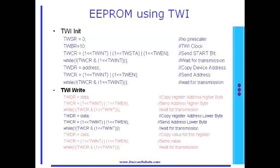This application is similar to the RTC example we have seen in the last chapter. To initialize the communication between the ATmega32 and the 24C256, initialization is done by setting the TWSR, TWBR, and TWCR registers. Further, by sending the address of the device, the device on the TWI bus is selected.